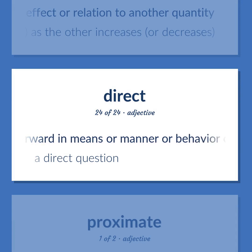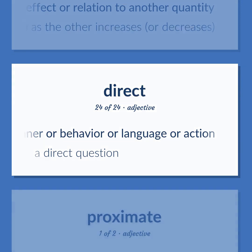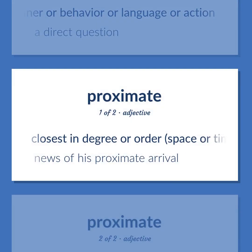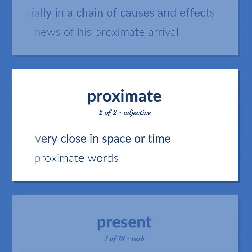Direct: Straightforward in means or manner or behavior or language or action — a direct question. Proximate: Closest in degree or order, space or time, especially in a chain of causes and effects — news of his proximate arrival. Very close in space or time — proximate words.